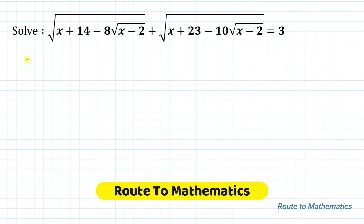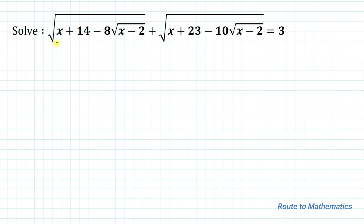Hello everyone, welcome to Root 2 Mathematics. In this video we are going to solve an interesting radical equation. The given question is: solve the square root of (x + 14 - 8√(x-2)) plus the square root of (x + 23 - 10√(x-2)) equals 3. We are asked to solve for x. Without any delay, let's start the solution.